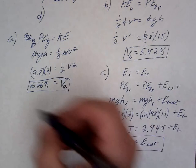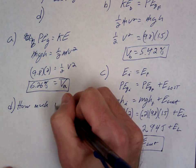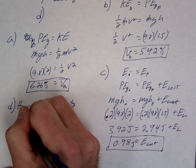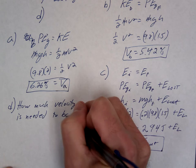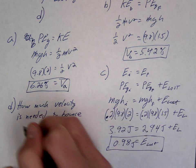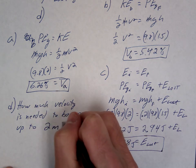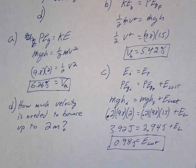I think I'll put it right here. So letter D, how much velocity is needed to bounce back to the 2 meters? So we want it to go back up to our 2 meter height. Okay, so I'm going to give you a chance to see if you can figure this out on your own.